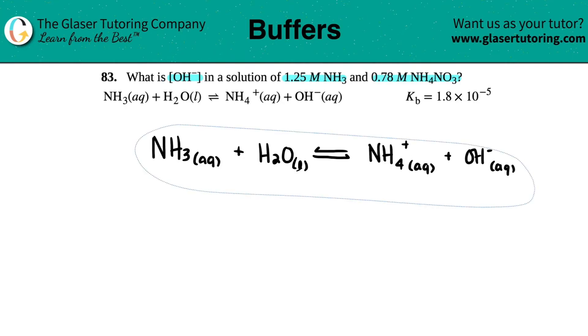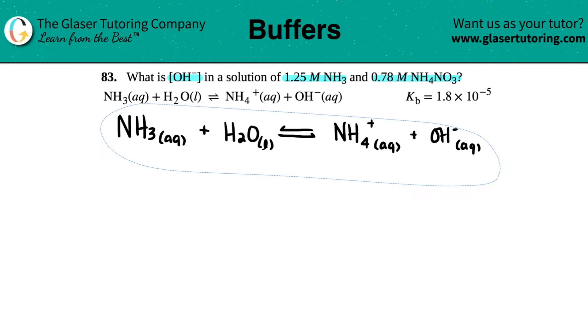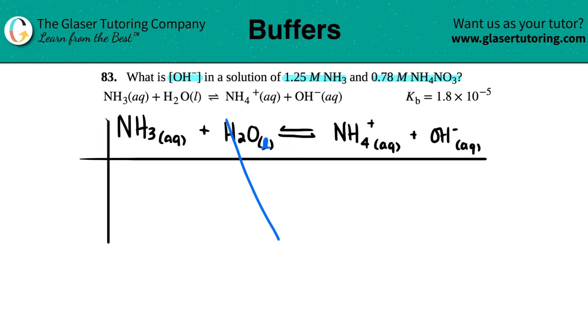So what I'm going to do is make an ICE table. Keep in mind that when we do ICE tables, liquids don't count. So the H2O goes bye-bye, and we're labeling this as I-C-E. I stands for initial, all the initial concentrations that they stated in the beginning. There's two of them.